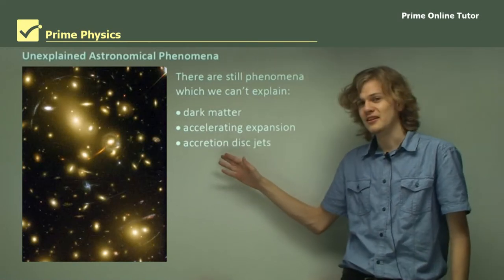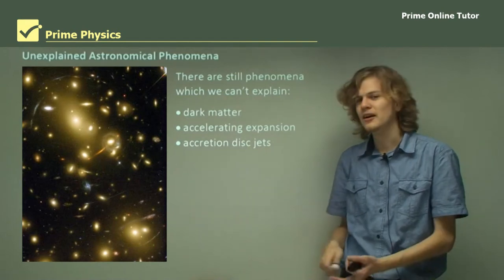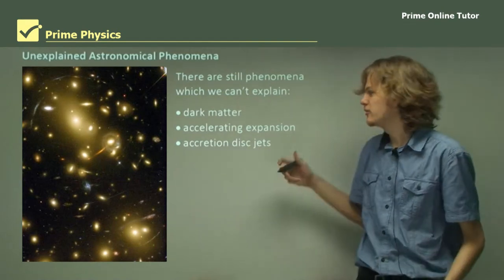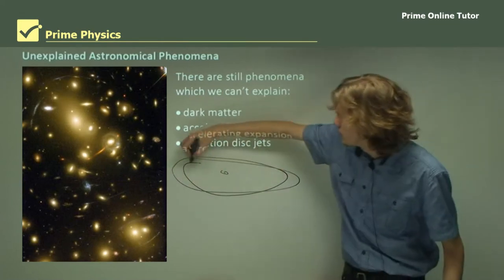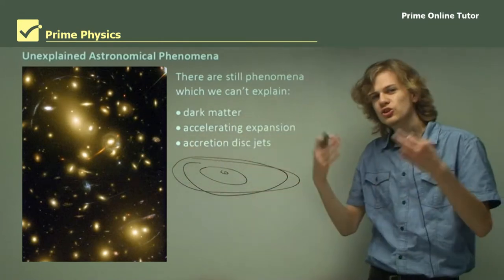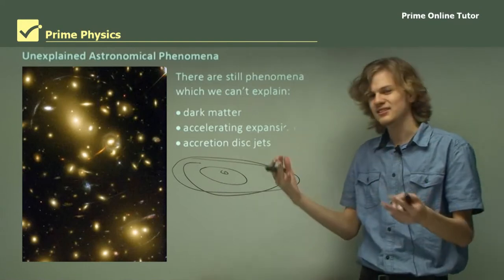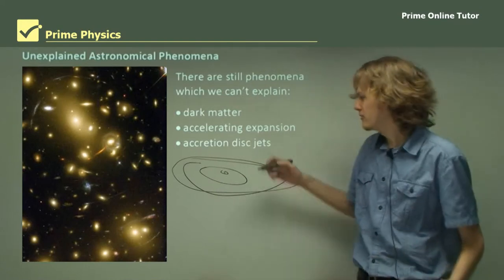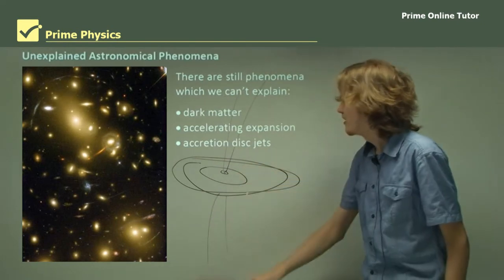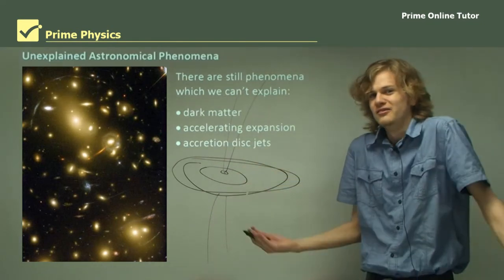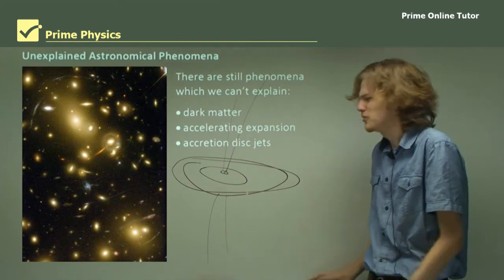There's the accretion jet disks. Sometimes when we get huge amounts of gas accreting around a heavy star or black hole, we have a whole bunch of gas surrounding a black hole. We get these huge jets of matter coming out from the sides like this. Why does it do that? No one knows. It's pretty interesting though.